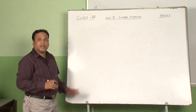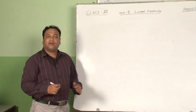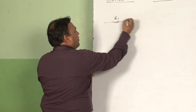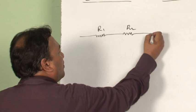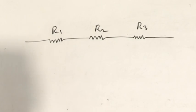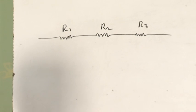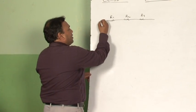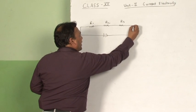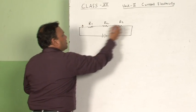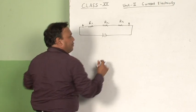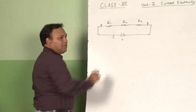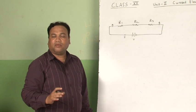Now let us connect resistors in series and parallel and see what happens to the effective resistance. I take the first resistor R1, the second R2, and the third R3, all connected end to end. This end-to-end connection is called a series connection. A battery is connected across this series combination between points A and B. As a result, the same current I flows through all three resistors since there is only a single path.